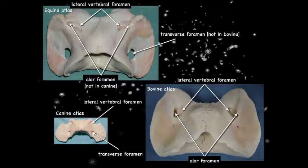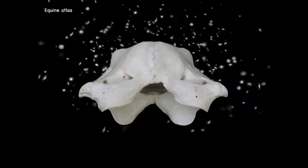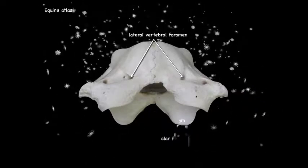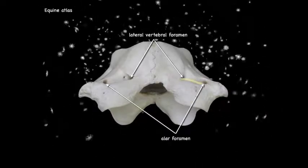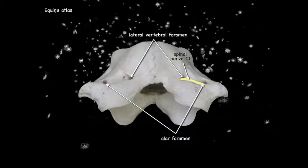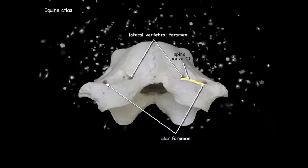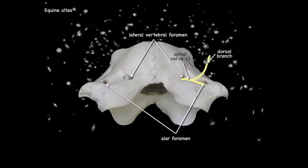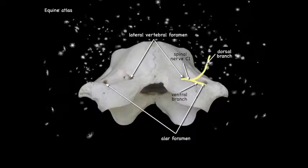The transverse foramina is present in the horse and in the dog, but not in the bovine — the vertebral artery and vein pass through this. Now looking at the dorsal cranial view, the first cervical spinal nerve passes from the lateral vertebral foramina outward: the dorsal branch goes dorsally into the epaxial muscles, and the ventral branch passes through the alar foramina.